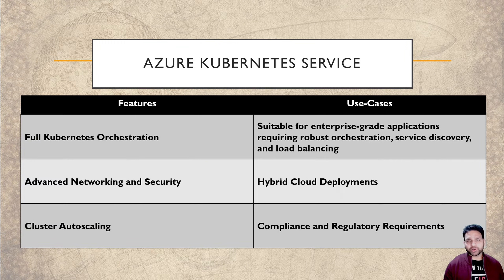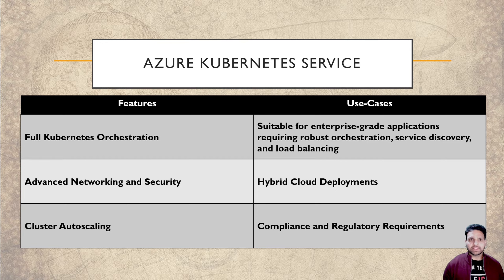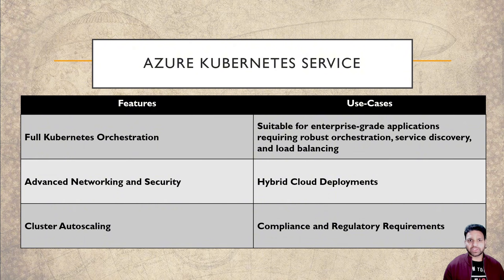The most important feature is cluster auto-scaling — you can scale your pods horizontally as well as vertically. Certain features that differentiate AKS from other container services include custom resource definitions, and integration with service mesh like Istio, which provides an extra advantage.